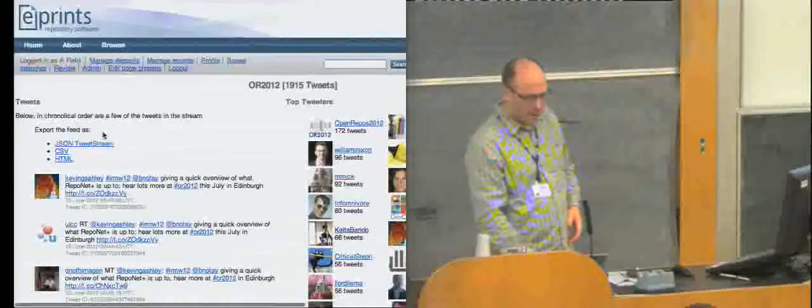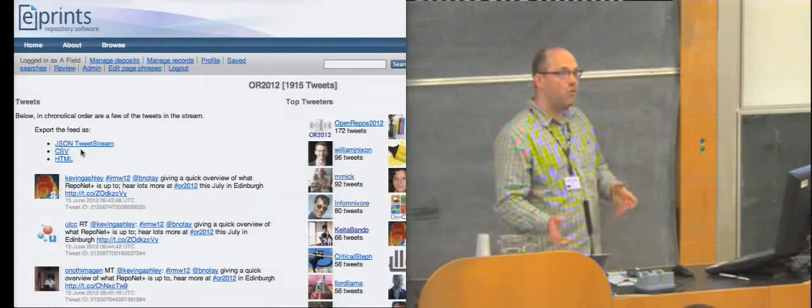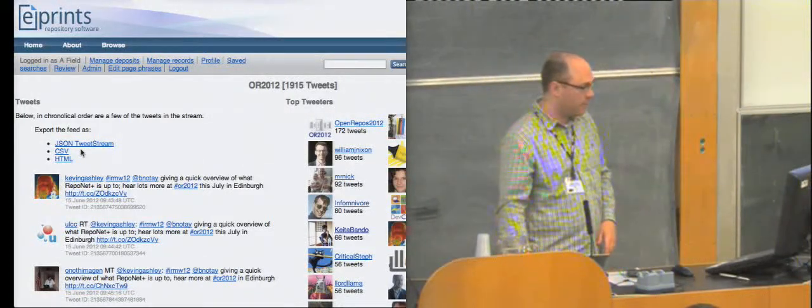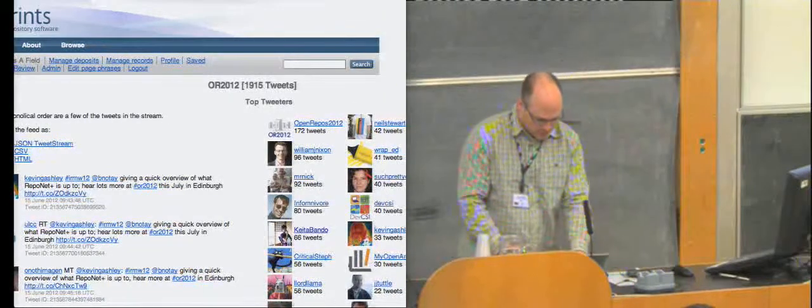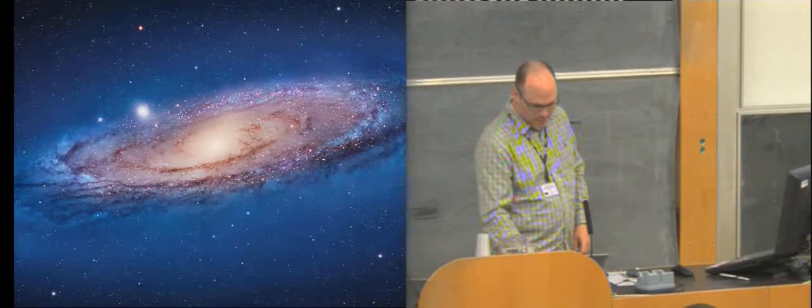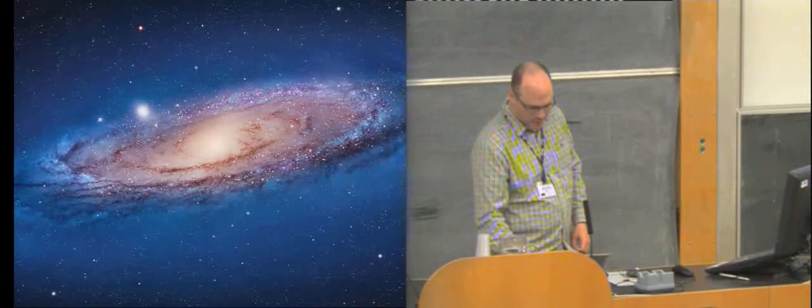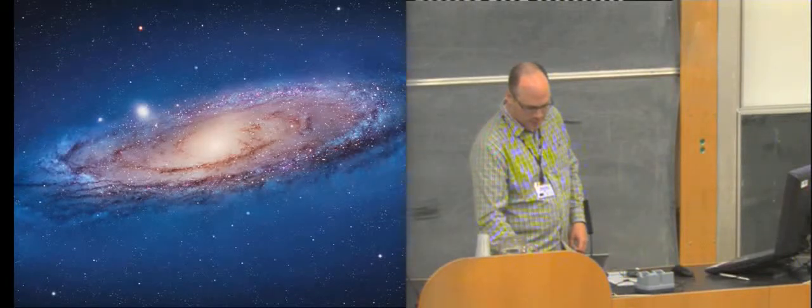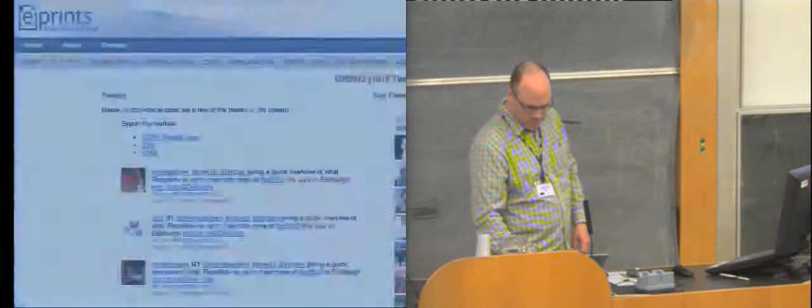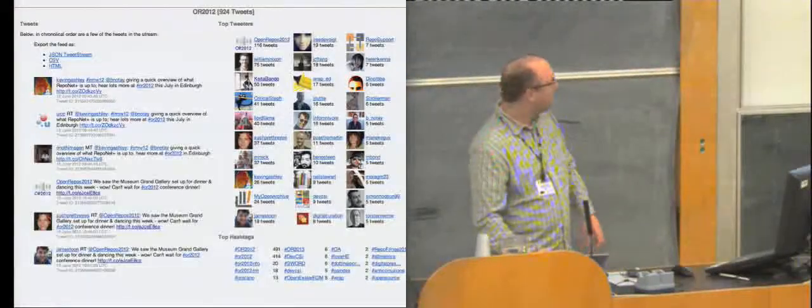So just by looking at this page we have a much better interface on the tweets than we had in the previous version. And then up in the top left we can export this as JSON, as CSV or as HTML which we previously couldn't do either. There was almost no way to get this data out in the previous iteration. I'm not in PowerPoint anymore. I've clicked the button. Why is it not doing anything? Hooray!